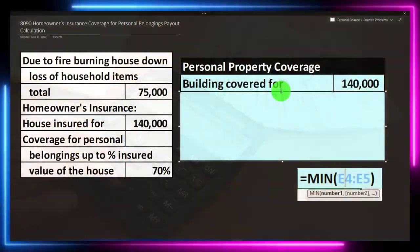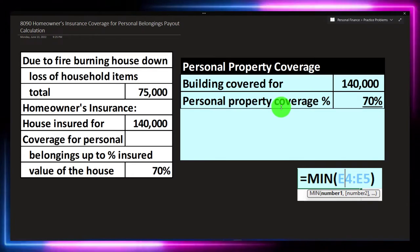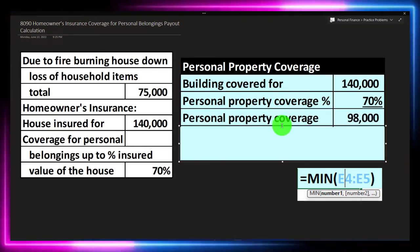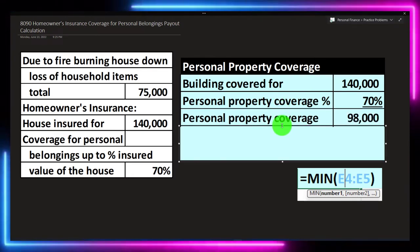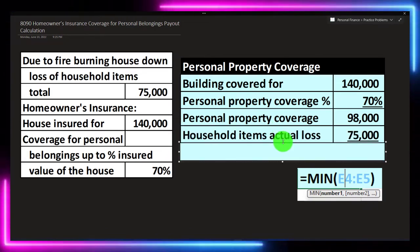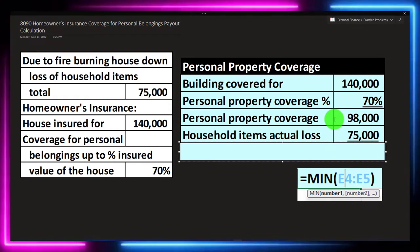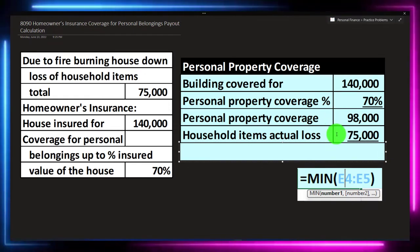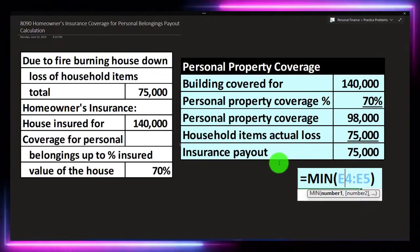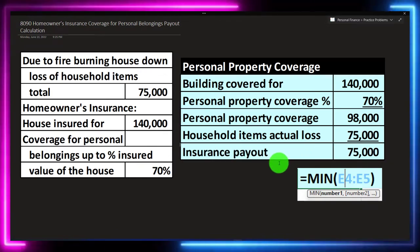So we've got the building covered for $140,000. We've got the personal property coverage up to 70% of that. So $140,000 times 70% equals $98,000. We then have the actual loss. It would be covered up to $98,000, but the actual loss is $75,000, so the insurance should be paying out the $75,000.